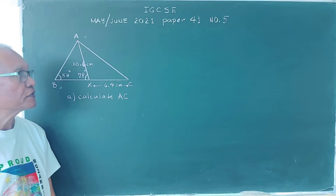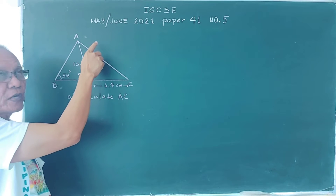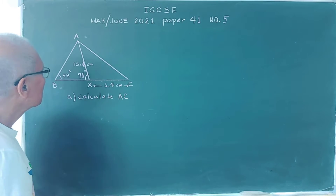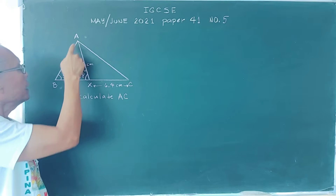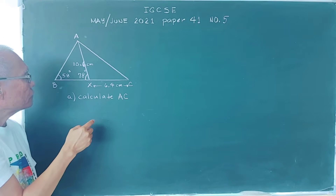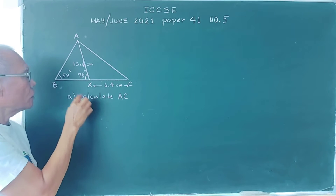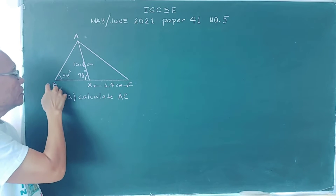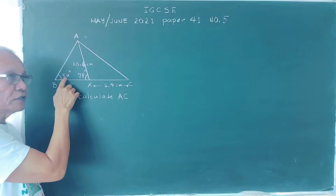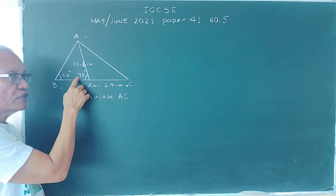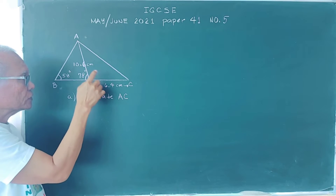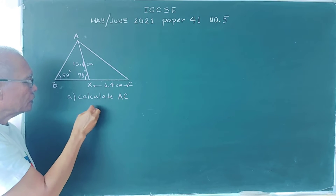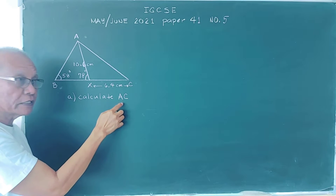Good day IGCS students. Today we are going to solve our past paper May June 2021 paper 41 number 5. We have triangle ABC with point X on line BC. Angle ABC is 58 degrees, angle AXB is 78 degrees, AX is 10.6 centimeters, and XC is 6.4 centimeters.